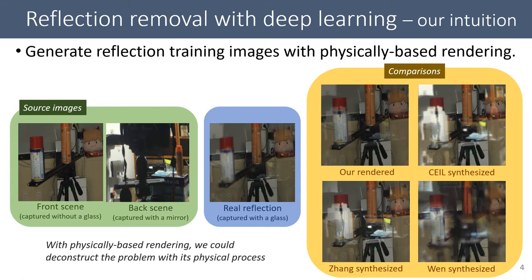In this work, we propose to generate reflection training image pairs with rendering, so that the training images can contain additional physical cues. They are source images for reflection generation, real reflections, and comparison. Our rendered reflections target to produce the spatially-variant visual effects that are most similar to real-world reflection images.